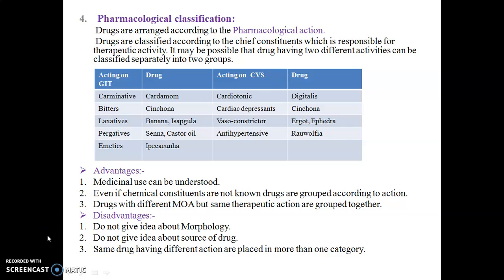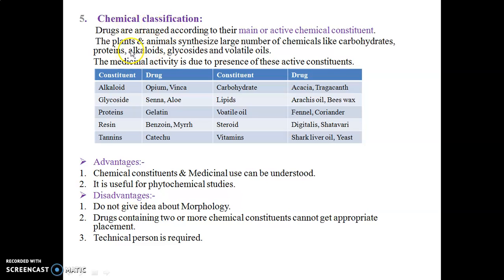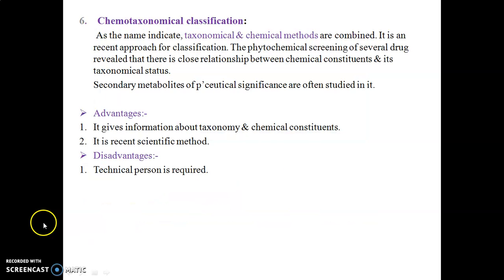Fifth is chemical classification, based on the active chemical constituent present — such as carbohydrates, proteins, alkaloids, glycosides, and volatile oils. Examples: alkaloids in opium and vinca; glycosides in senna and aloe; proteins in gelatin; resins in benzoin and myrrh; tannins in catechu; carbohydrates in acacia and tragacanth; lipids in arachis oil and beeswax; volatile oils in fennel and coriander; steroids in digitalis and shatavari; vitamins in charcoal and yeast. Advantages: chemical constituents and medicinal use can be understood; useful for phytochemical study. Disadvantages: does not give idea about morphology, a drug containing two or more constituents may not get appropriate placement, and a skilled technical person is required.